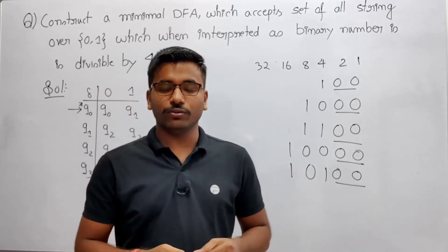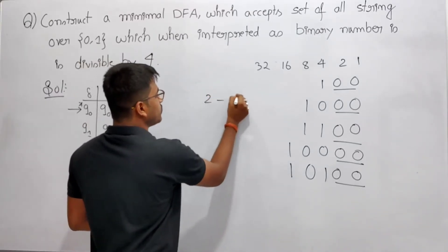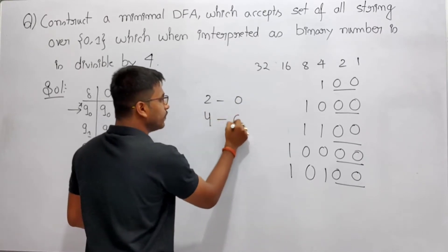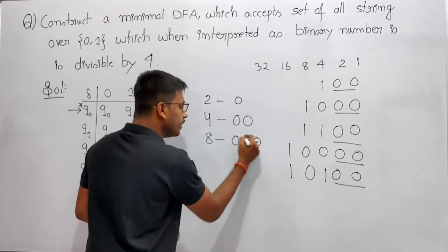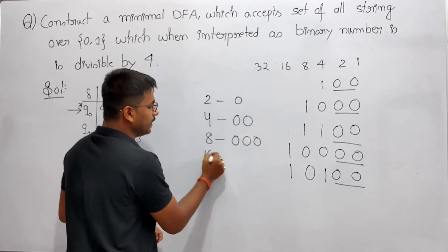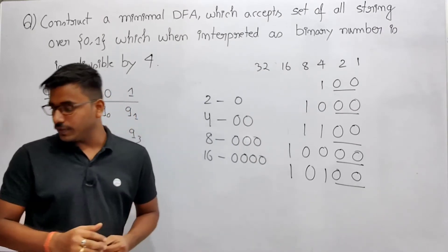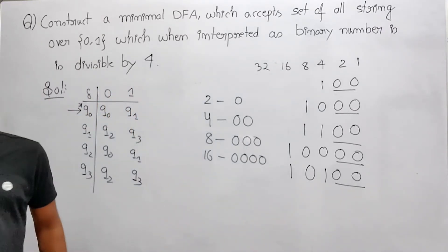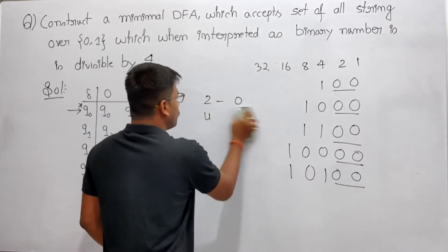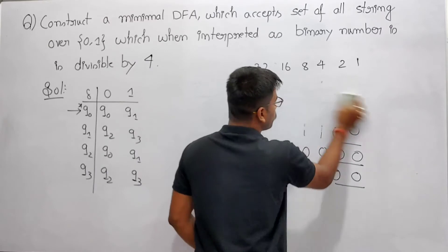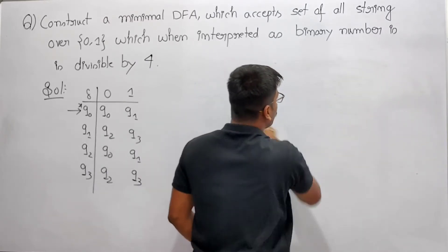If a number is divisible by 2, the binary number ends with a single 0. If divisible by 4, it ends with two 0s. If divisible by 8, it ends with three 0s. If divisible by 16, it ends with four 0s, and so on. So from this property, we can conclude that a binary number divisible by 4 ends with two 0s. So now we will construct a minimal DFA that accepts strings ending with two 0s.